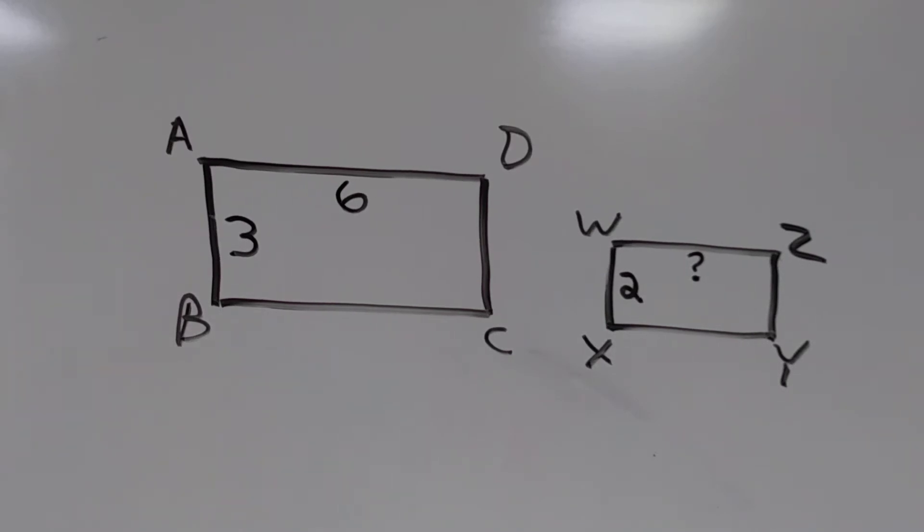Let's look at this example. Here we have rectangle ABCD similar to rectangle WXYZ. We can see that the short side, AB, and also DC, measures three units wide. The long side, AD, measures six units long.